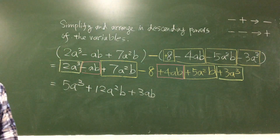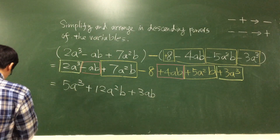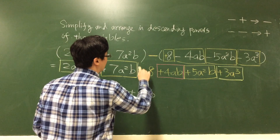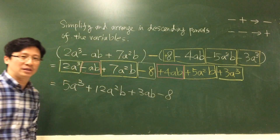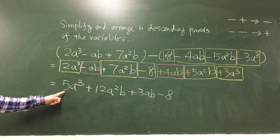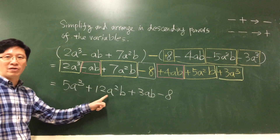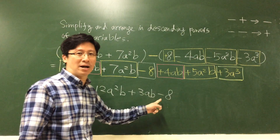Finally, we have only one constant term, which is negative 8. Then we define the final answer as 5a cubed, plus 12a squared b, plus 3ab, minus 8.